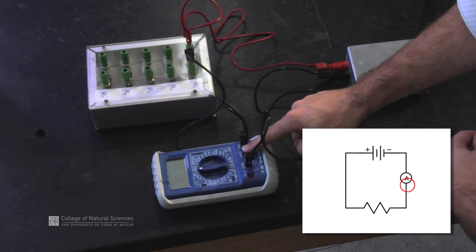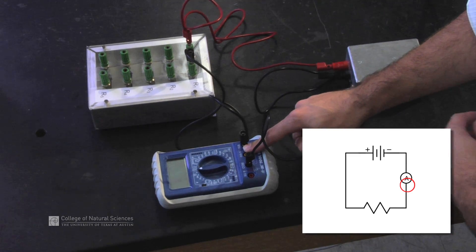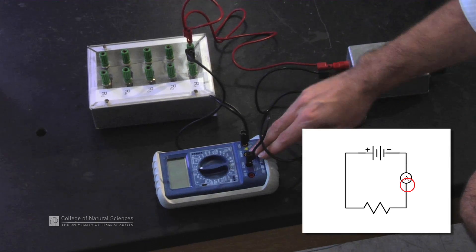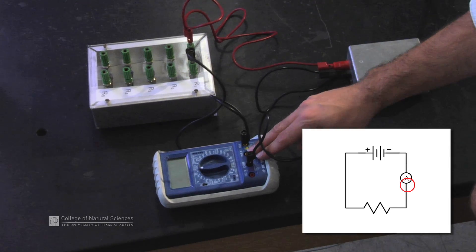I'm starting on the 10 amp side to make sure that any current that flows through here, we're protected. We're not going through too small, or we're not trying to measure too small of a current.